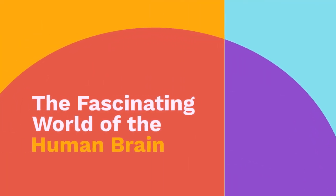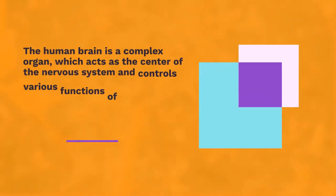Today we will know some interesting facts about the brain. The human brain is a complex organ which acts as the center of the nervous system and controls various functions of the body.